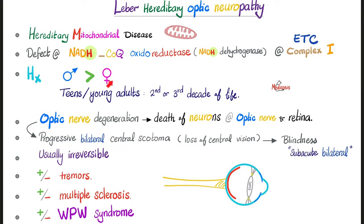When these patients present to the doctor with symptoms, they are usually in the second or third decade of life. The third decade of life is between age 21 and age 30. The first decade is age 1 to 10, the second decade is age 11 to 20, and the third decade is age 21 to 30.